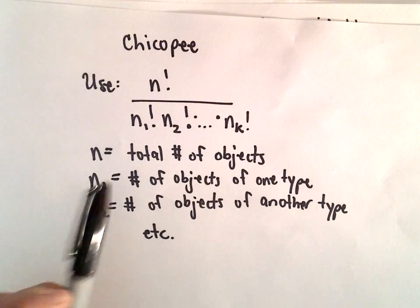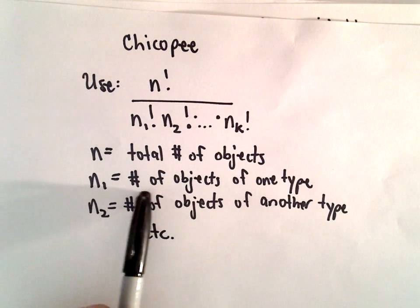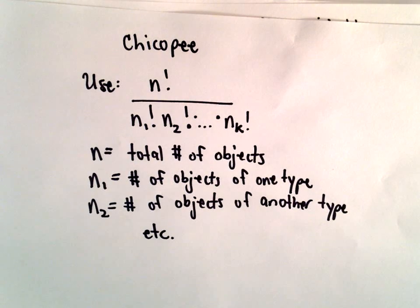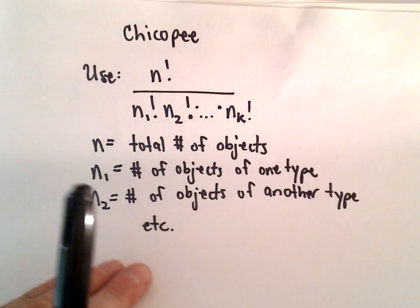And n is going to be the total number of objects, n sub 1 is going to be the number of objects of one type, n sub 2 will be the number of objects of another type, etc.